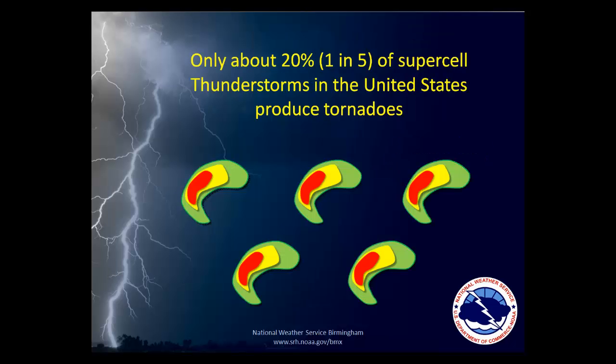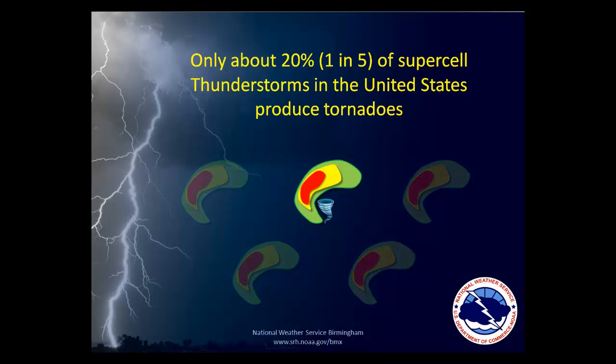A supercell is still no guarantee of a tornado. In fact, the latest research shows that only about one in five supercells goes on to produce a tornado. Weather research projects such as Project Vortex are continually trying to find answers as to why some supercells produce tornadoes while others do not. What you need to remember is this: if you hear the term supercells in a weather broadcast for your area on a particular day, then that is a day you need to be especially weather aware.